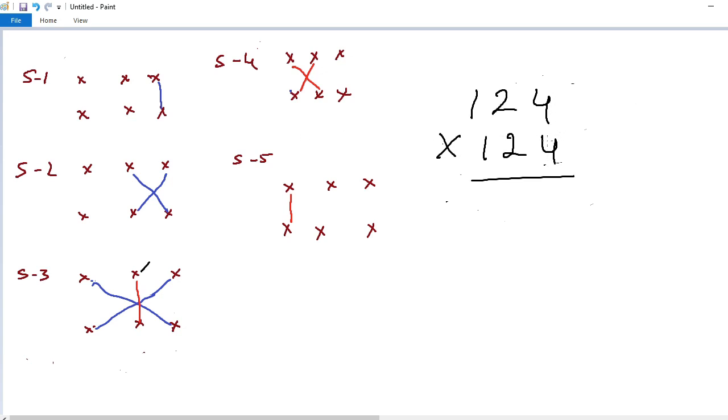Step 1, multiply these two numbers. 4 into 4, 16 carry 1. Next cross multiplication 2 into 4, 8 plus 2 into 4, 8. So 8 plus 8, 16 carry 1, 17. Again carry is equal to 1.